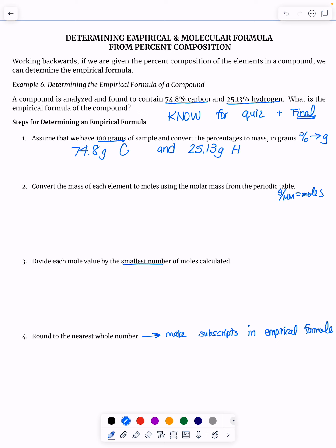Then the next step says, take these masses and convert them into moles by dividing by the molar mass. Well, the molar mass of carbon is about 12 grams. The molar mass of hydrogen is about one gram.